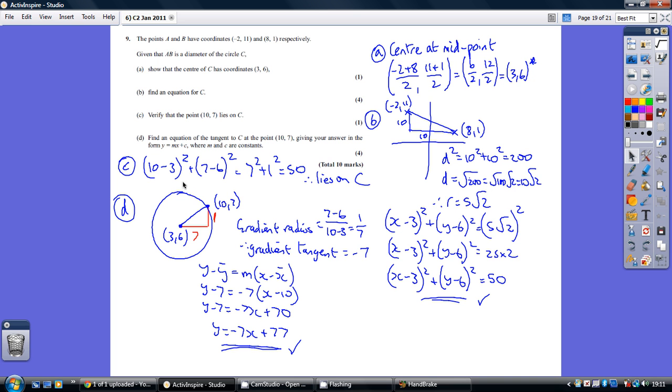Now, remember, the angle between a tangent and a radius is 90 degrees. That's one of the circle theories from GCSE. So, how do we flip between the gradient for a perpendicular, between a radius or a tangent and normal? We basically flip it over, change the sign. So, the gradient of our tangent is minus 7.